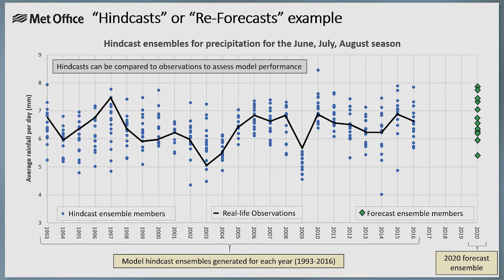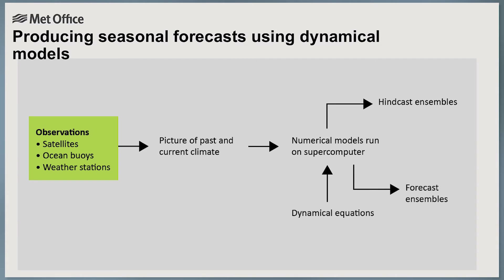As a recap, here is a flow diagram reminding us of the process of producing seasonal forecasts using dynamical methods. First, observations are used to paint a picture of the current global climate system. This picture is then projected forward in time using dynamical equations built into a numerical model run on the supercomputer. These models produce both hindcast ensembles and forecast ensembles.